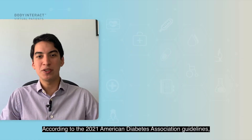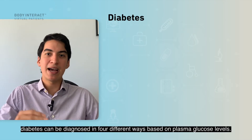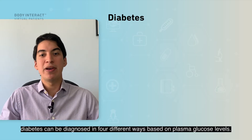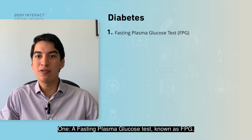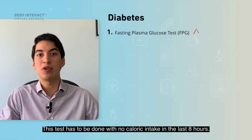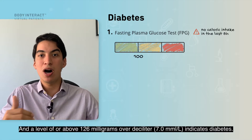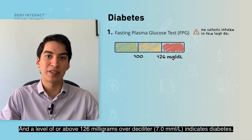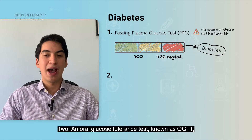According to the 2021 American Diabetes Association guidelines, diabetes can be diagnosed in four different ways based on plasma glucose levels. First, a fasting plasma glucose test, known as FPG — this test requires no caloric intake in the last eight hours, and a level at or above 126 mg/dL indicates diabetes.